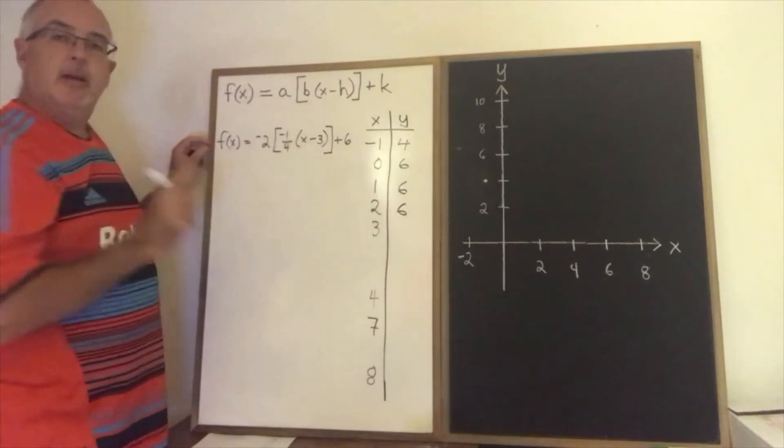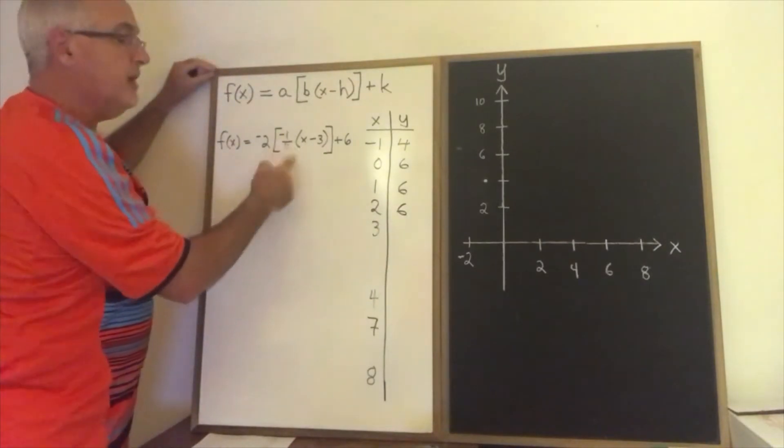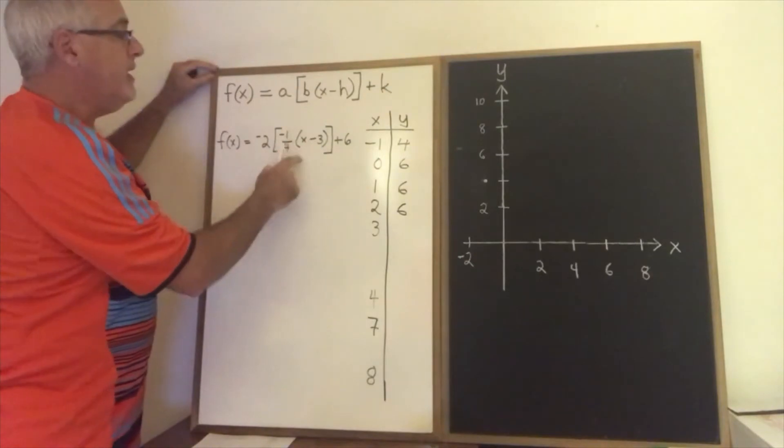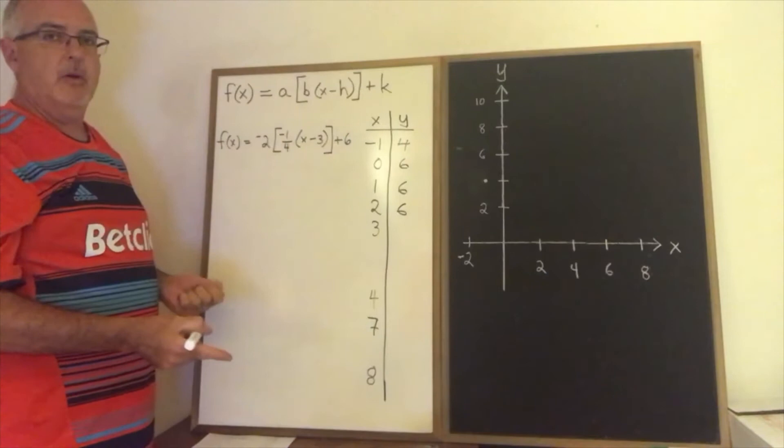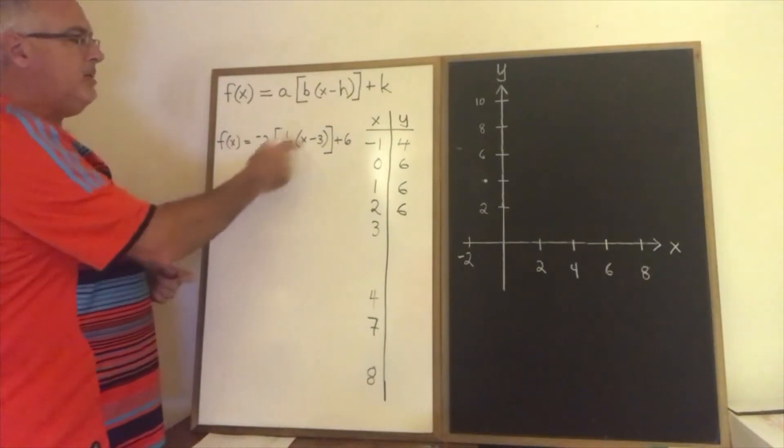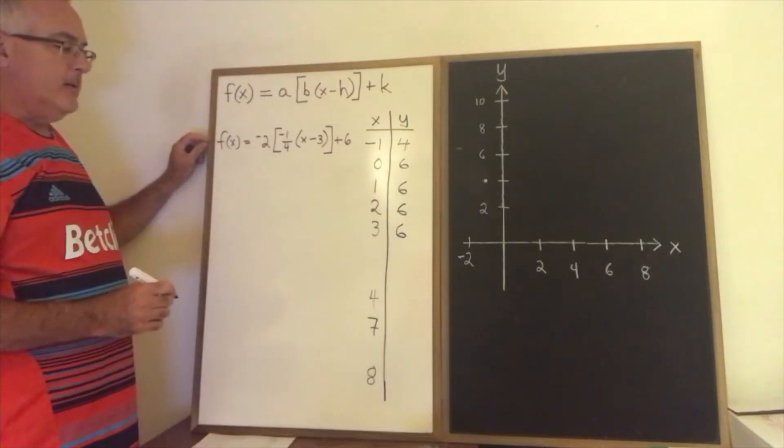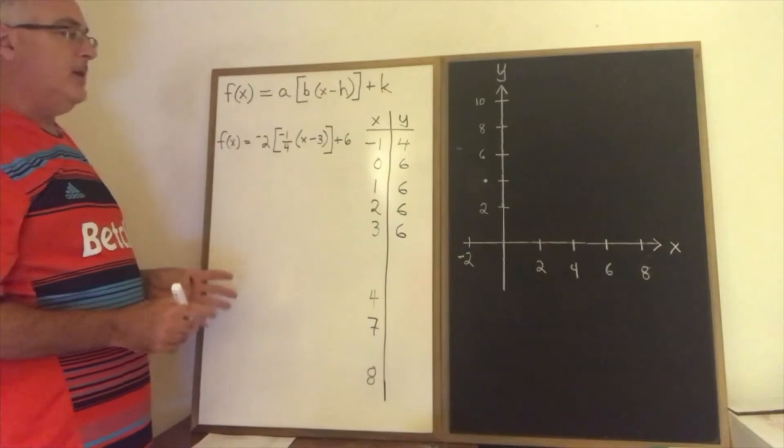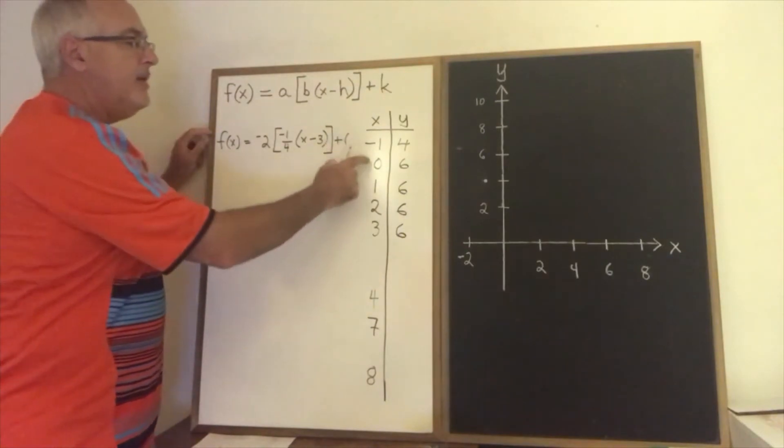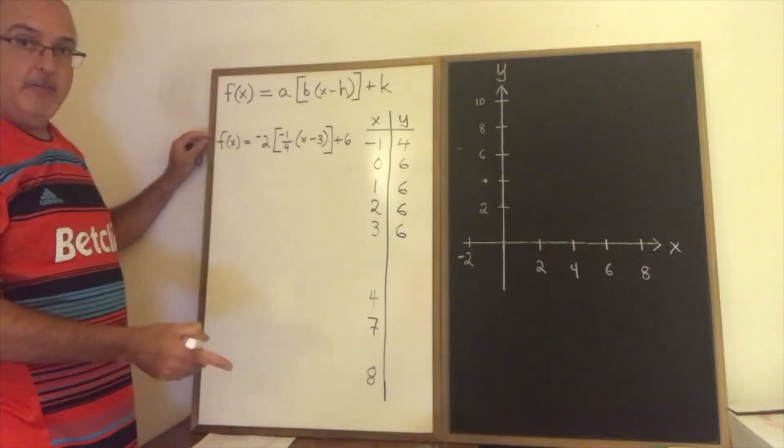3 minus 3. Something different is happening finally. 3 minus 3 is 0. 0 times negative 1 quarter is 0. The greatest integer less than or equal to 0 is still 0 though. 0 times negative 2 is 0 plus 6 is 6. We have yet another point where the y coordinate is 6. I've left some space because it's instructive and useful to consider points that do not have whole numbers for their x when you're dealing with a step function.